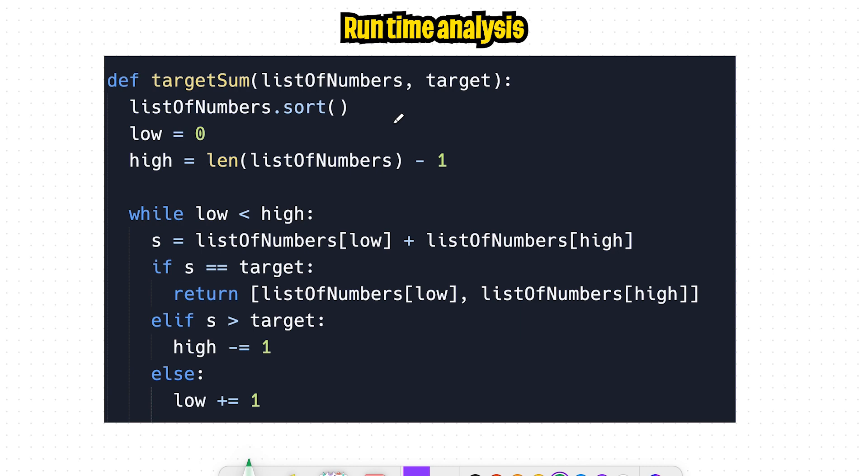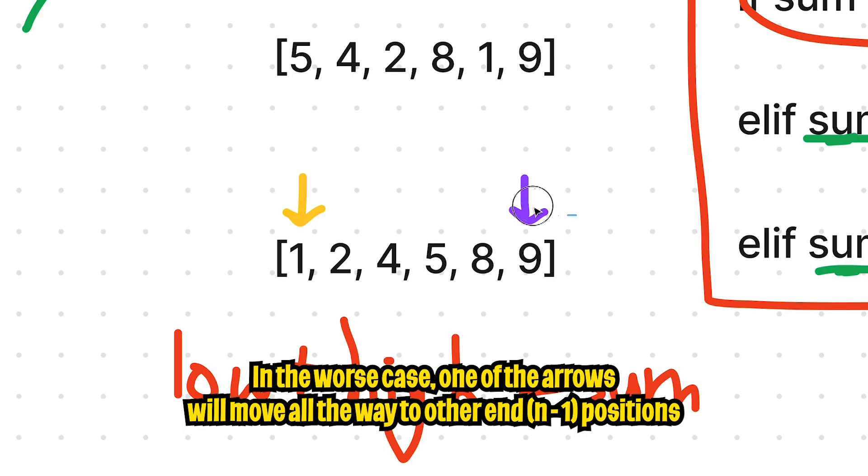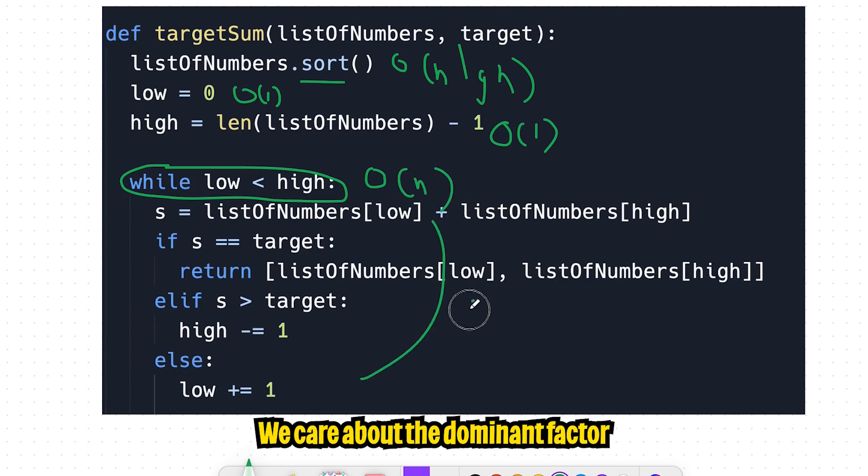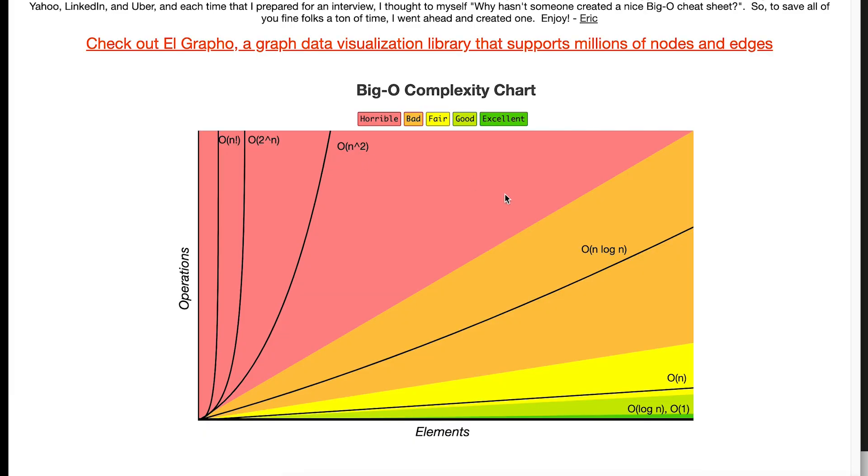So the final thing that we'll do is to analyze the runtime of the algorithm. So first, we did a sort here, which is basically O of N log N. Setting these variables is just O of one, O of one. And here we have a while loop. And in the worst case for this while loop, one of these arrows will move to the other N. So in the worst case, we'll have to visit at least N minus one numbers, which is basically just O of N. And the rest of these statements here are all just O of one. So the dominant factor here is the sorting, which is O of N log N. As you can see, by doing something simple like sorting, we were able to bring our runtime from O N squared all the way down to O N log N.